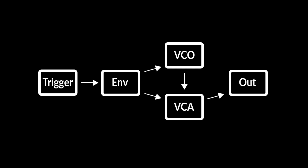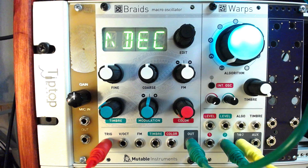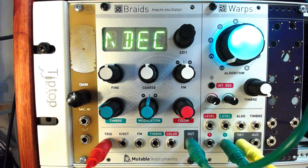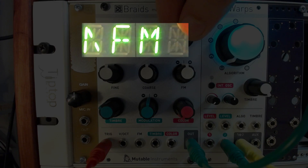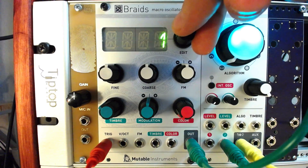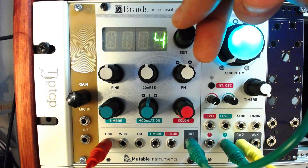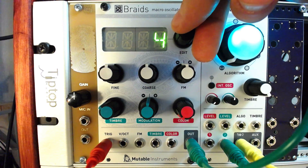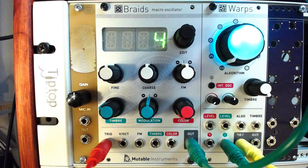If we scroll to the envelope FN menu, we can assign a certain amount of pitch modulation in addition to the VCA control. It doesn't take much pitch modulation to get the right effect, so try setting it to 4 or 5.